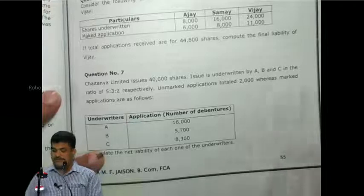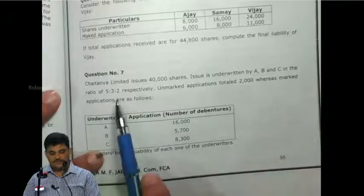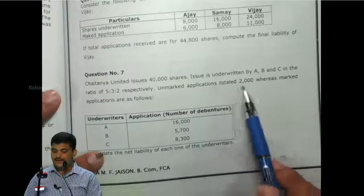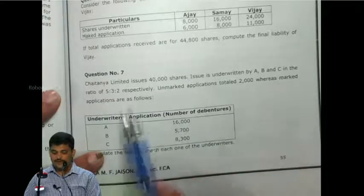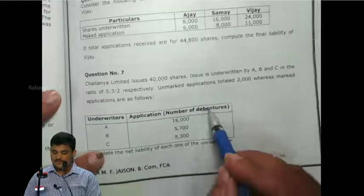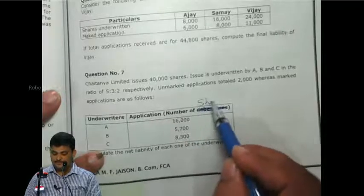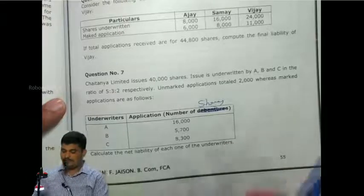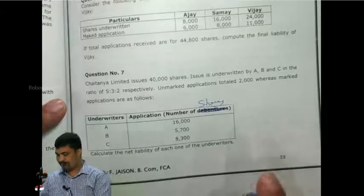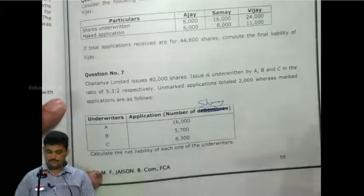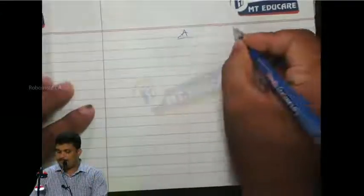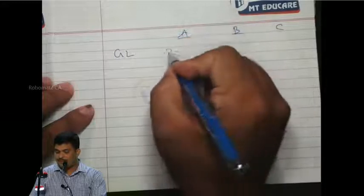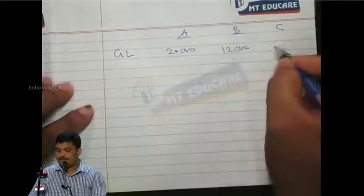Next problem: 40,000 shares issued, underwritten by A, B, and C in ratio 5:3:2 respectively. Unmarked applications total 2,000, whereas marked applications are given. Calculate the net liability of each underwriter. A, B, C. Gross liability: 20,000, 12,000.